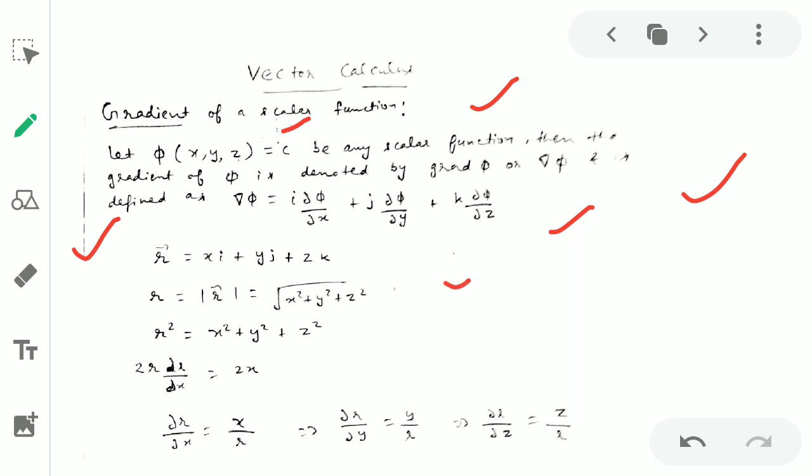Now let us consider that we have a vector, that is R = xi + yj + zk. If you compute the magnitude, mod of R vector will be √(x² + y² + z²).